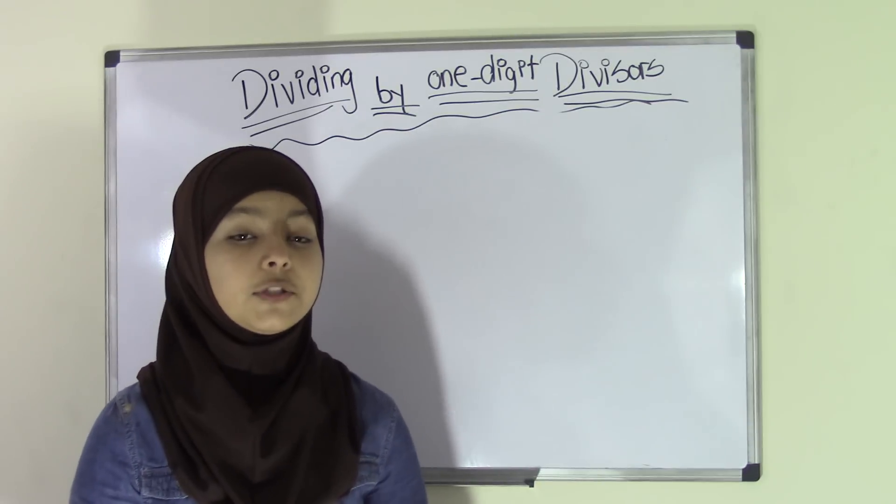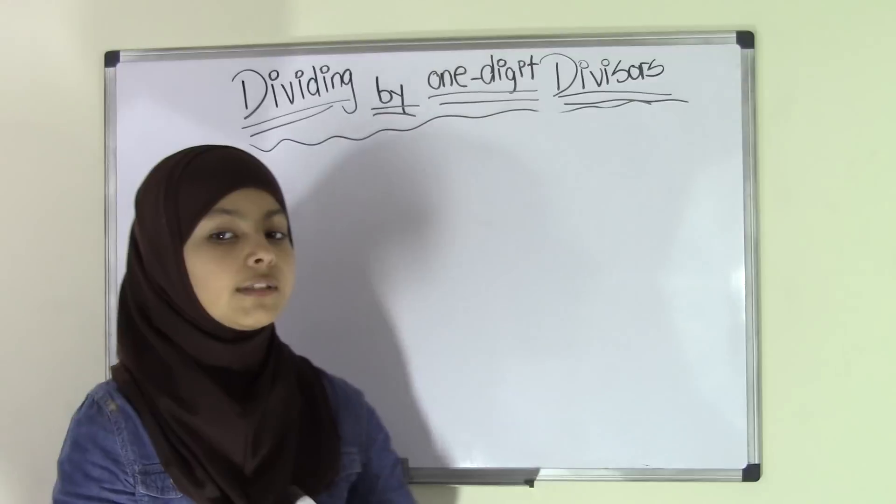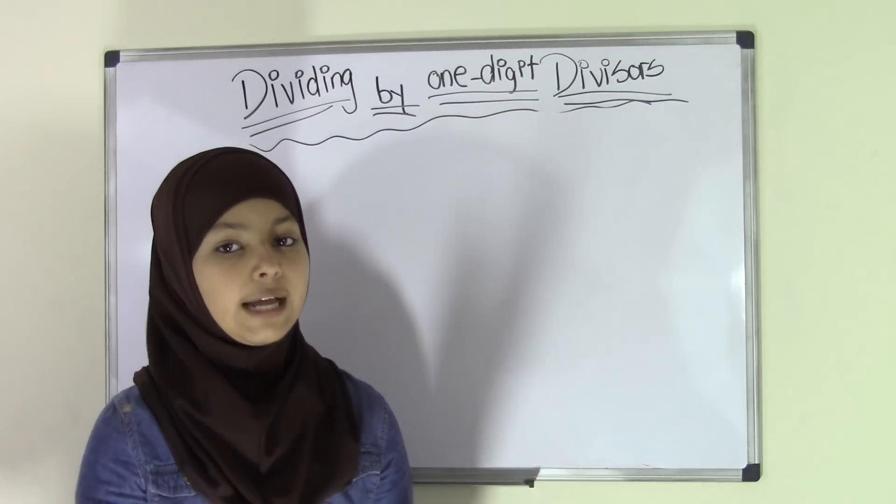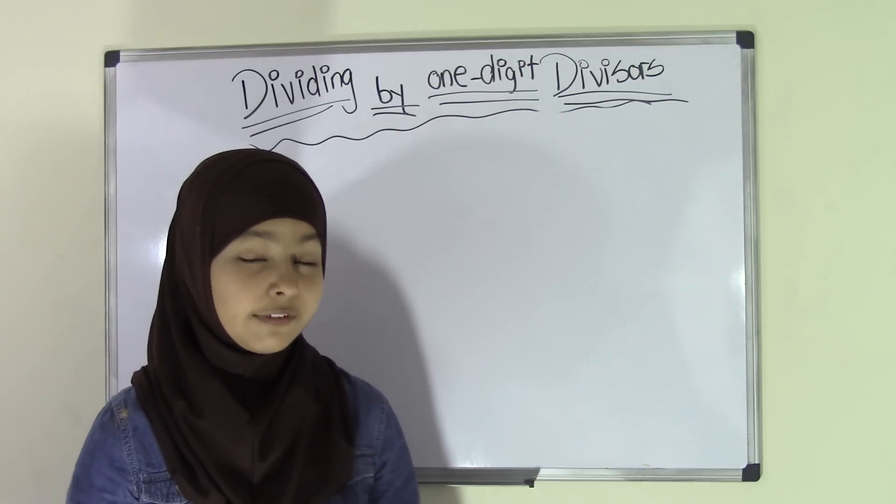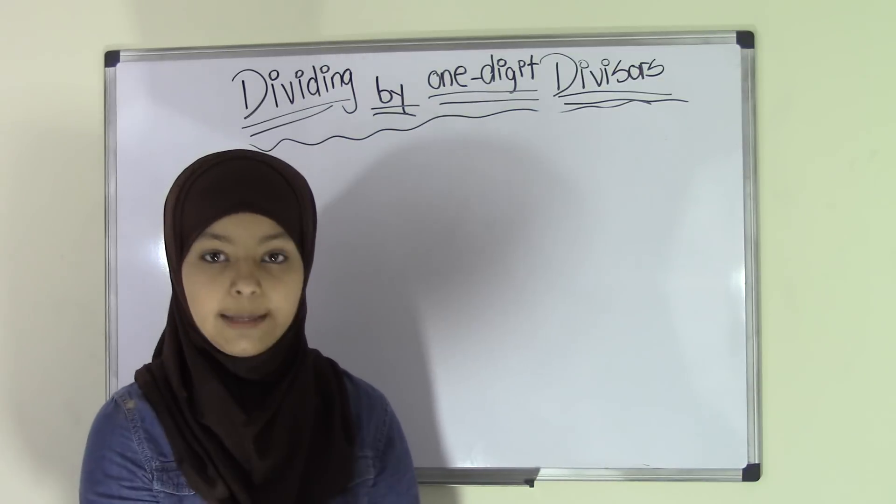Now keep in mind, especially in 5th grade, when you're dividing by one-digit divisors, the divisors you're going to confront are probably going to range from 2 to 9 because we know that whenever we divide any number by 1, your quotient is going to be that same number.